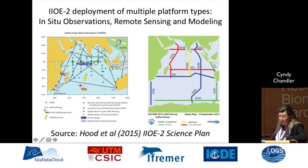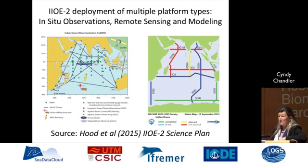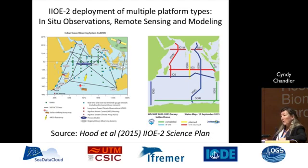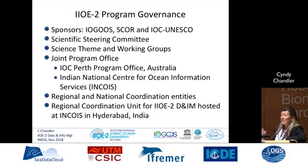We've got existing arrays of floats, gliders, moorings, and buoys that are already out there collecting data for years, if not decades. There are also go-ship repeat hydrography tracks planned for the Indian Ocean Basin, and these cruises will be applying for endorsement as official IIOE2 programs. Part of what that means is that they will be expected to comply with the data policy and expectations of open data sharing — though the go-ship data from repeat hydrography programs already meet that expectation.